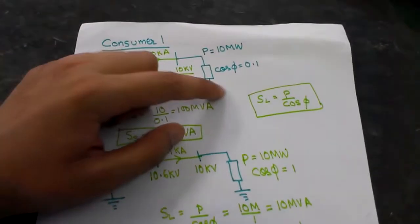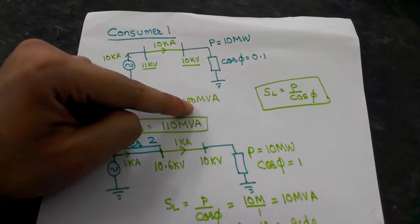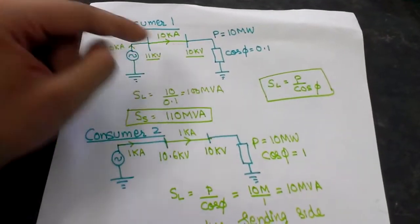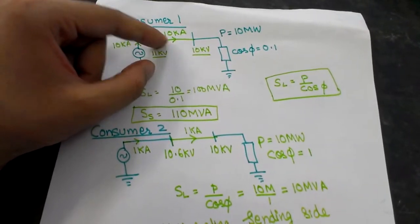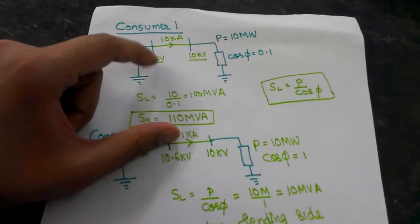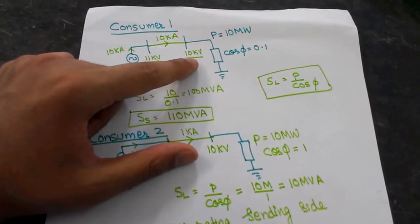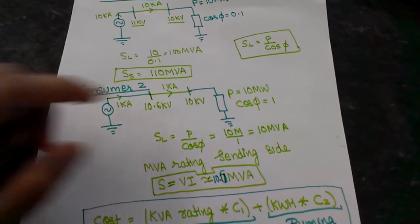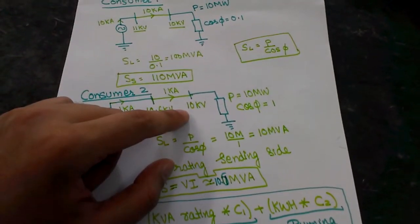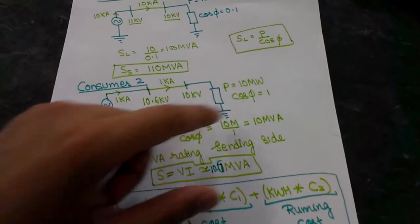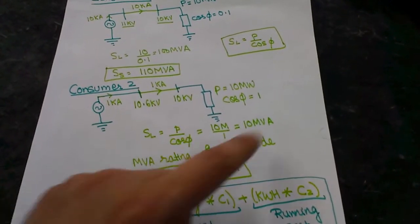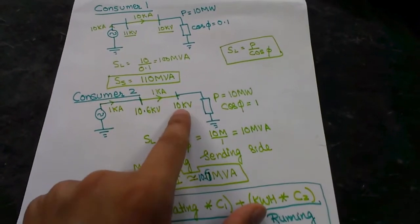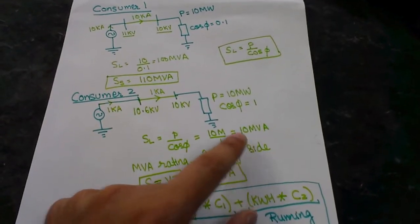So this consumer draws 100 MVA. Dividing by 10 kilovolts gives 10 kiloamps — the power utility must supply 10 kiloamps to this consumer. Let's say there was a voltage drop of 1 kilovolt, so the utility generates 11 kilovolts at the sending end and the customer receives 10 kilovolts. For the second consumer, also consuming 10 megawatts but at cos φ = 1, the apparent power S = P / cos φ = 10 MVA. Dividing 10 MVA by 10 kilovolts gives only 1 kiloamp of current.